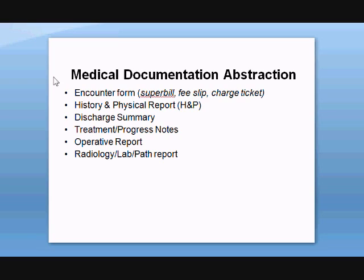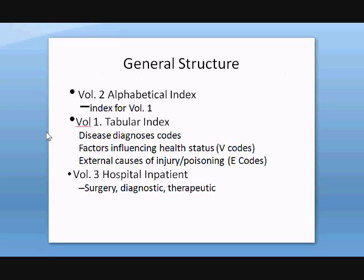Typically in class, students get a simple questionnaire and come up with answers. But in real life when you are coding, these are the areas where you generally get your information: things like encounter forms, which are superbills, fee slips, and charge tickets; history and physical reports; discharge reports; laboratory reports; pathology reports; operative reports; and progress notes. These are the areas where you'll get your information to code from.